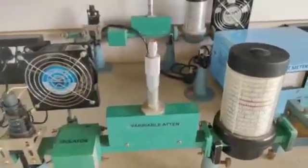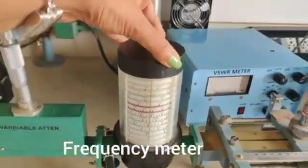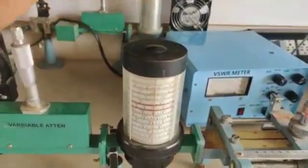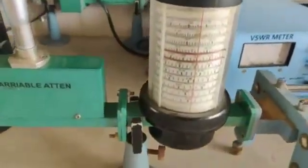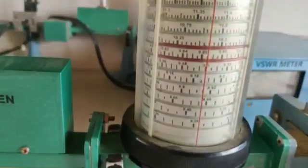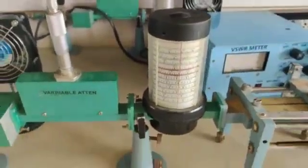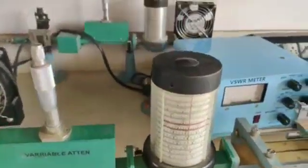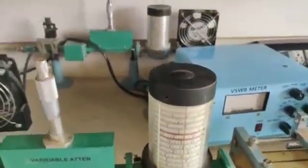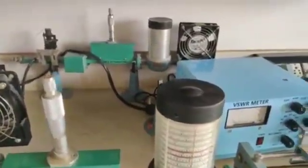Then next is frequency meter. We can rotate it and keep to the required frequency. Now it is kept at 9.8, so you can keep it in 9.8 gigahertz range. It is used to measure the frequency.